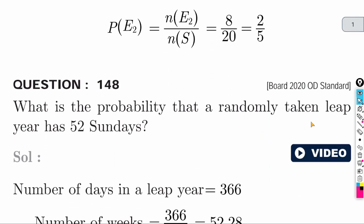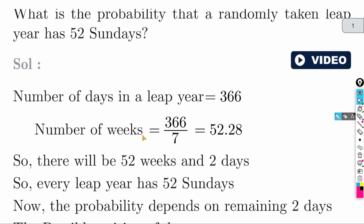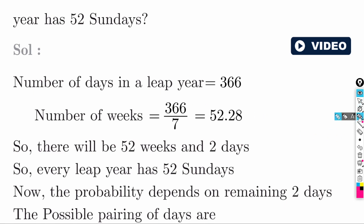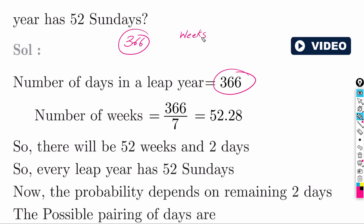Question: what is the probability that a randomly taken leap year has 52 Sundays? A leap year has 366 days. We will count the weeks because every week will have at least one Sunday. From there we can find out the number of Sundays.